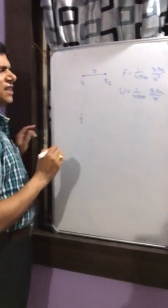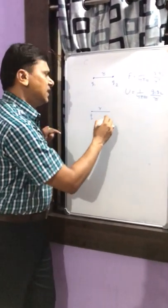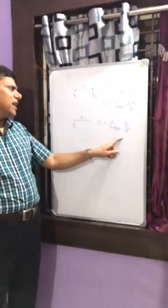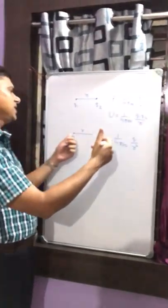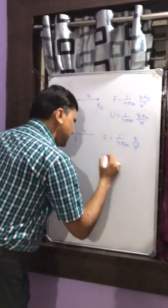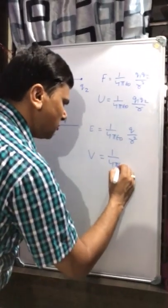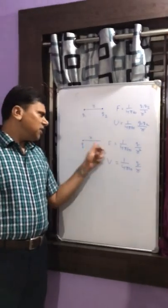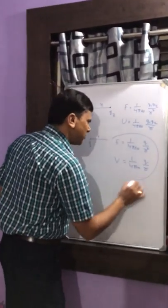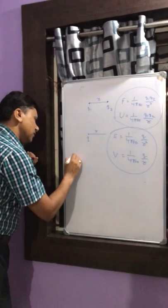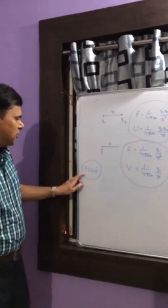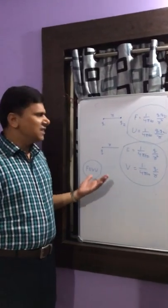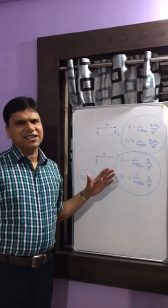Suppose we have a charge Q, and at a distance r from it, the electric field is given by (1 over 4π ε₀) Q over r squared — directed away if positive, towards if negative. The electric potential at that point is (1 over 4π ε₀) Q over r, which is positive for a positive charge and negative for a negative charge. To summarize in short — FEVU: F is force, E is electric field, V is potential, and U is potential energy. You can now solve problems to gain clarity on these four terms. Thank you.